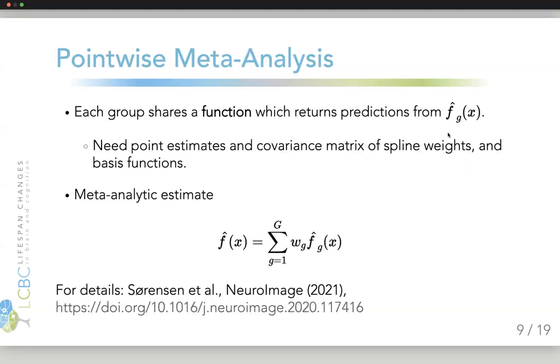Each group then shares a function which can return predictions from this estimated f hat when you plug in values of the predictors x. The only things we need to get this is point estimates and the covariance matrix of the spline weights, and we need to know the basis functions that were used.